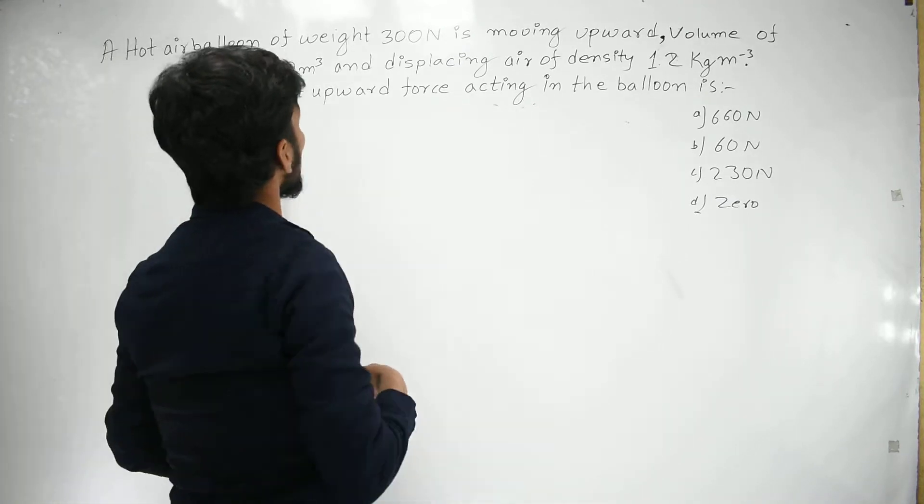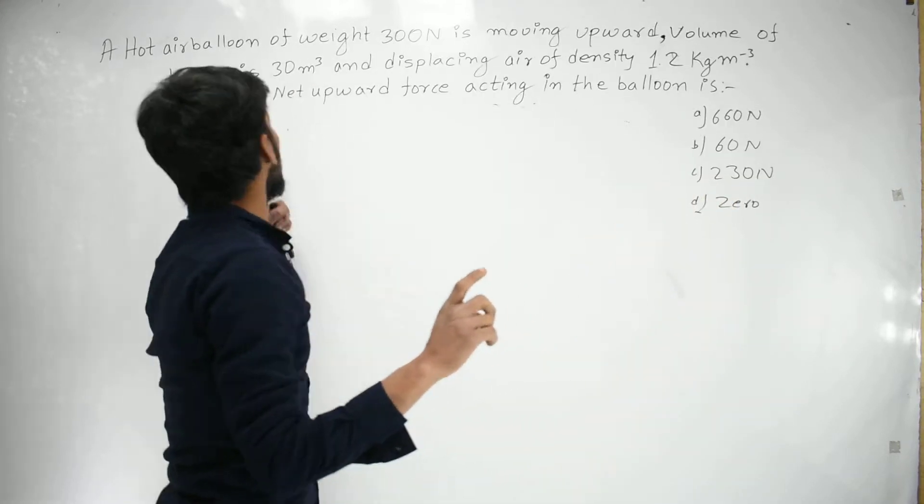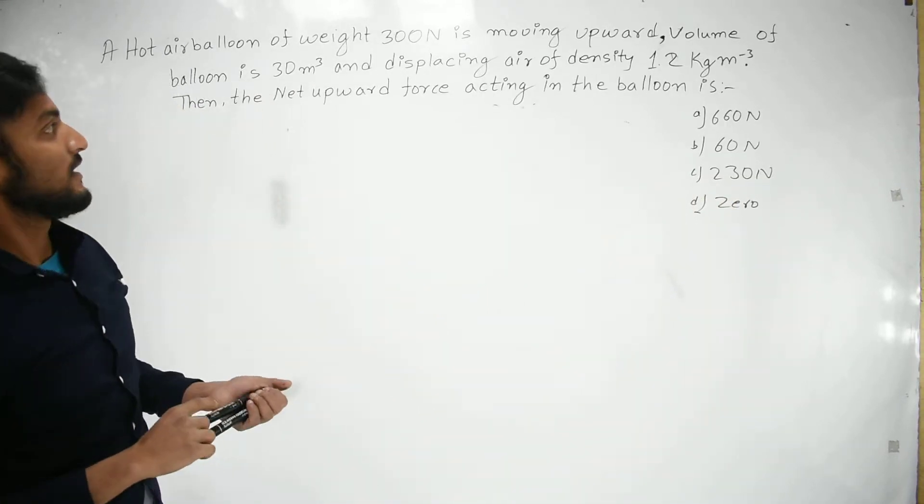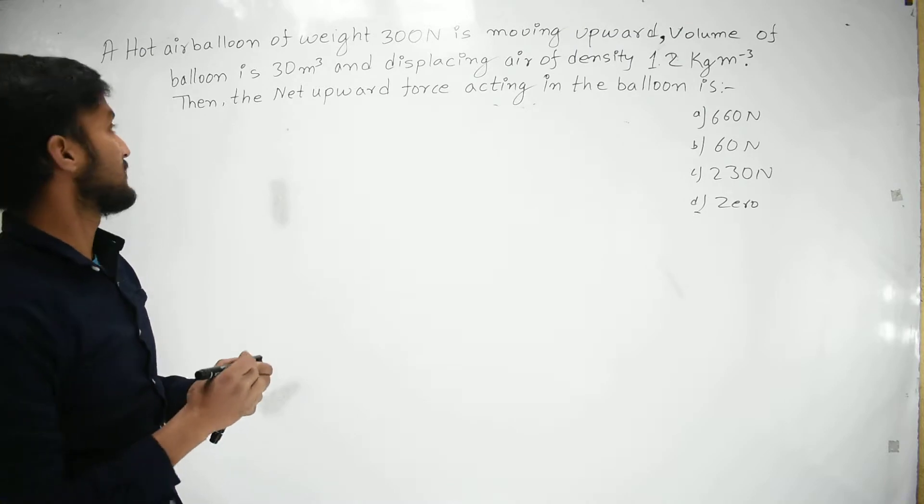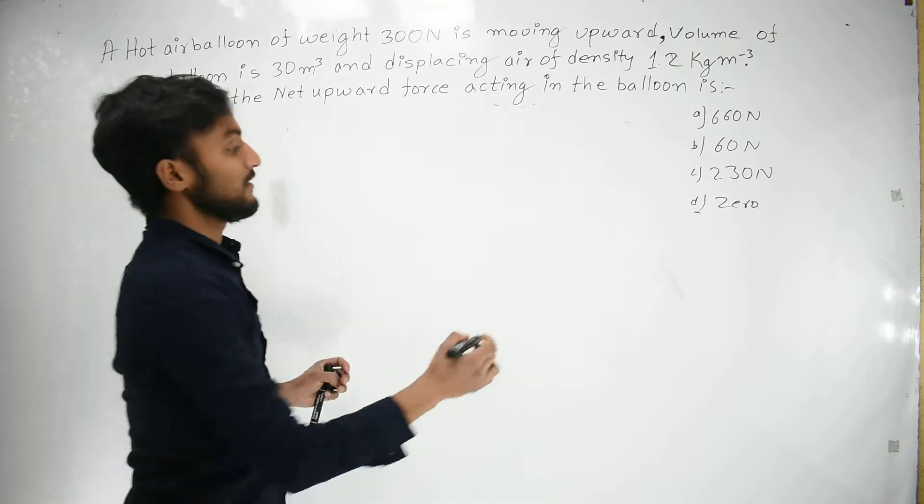A hot air balloon of weight 300 newtons is moving upward. Volume of balloon is 30 cubic meters and displacing air of density 1.2 kg per cubic meter. Then the net upward force acting on the balloon.